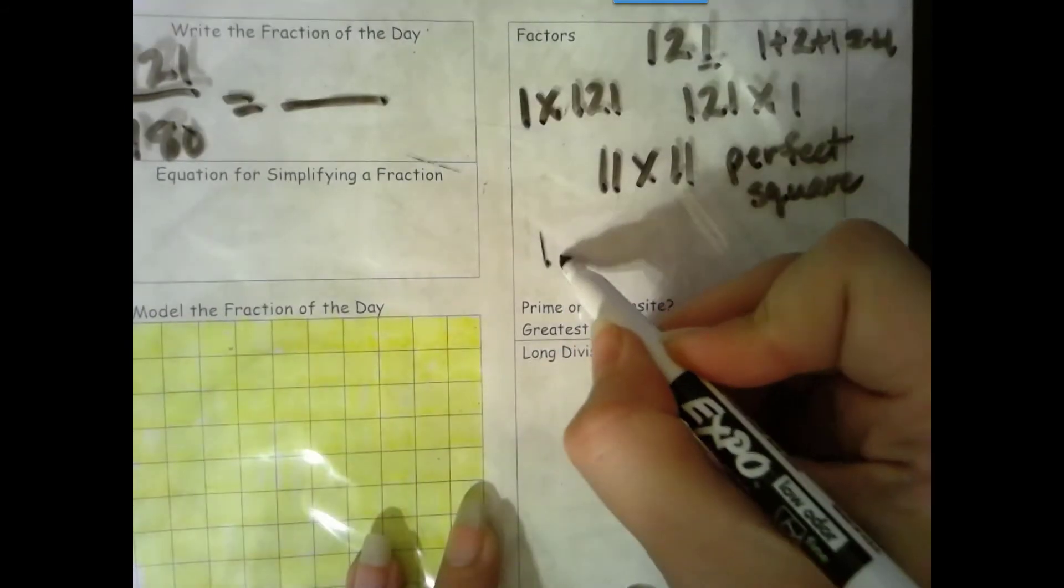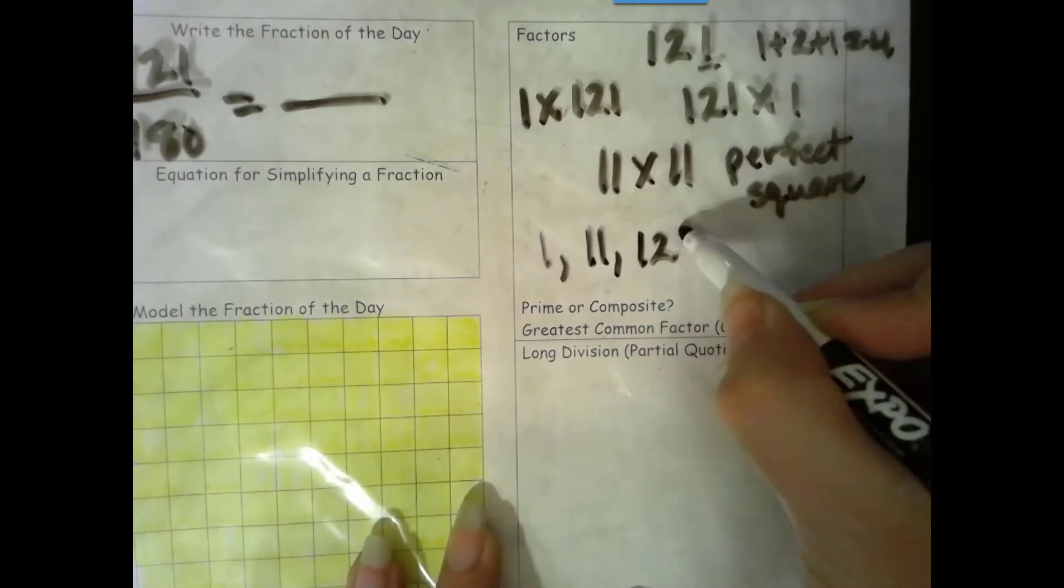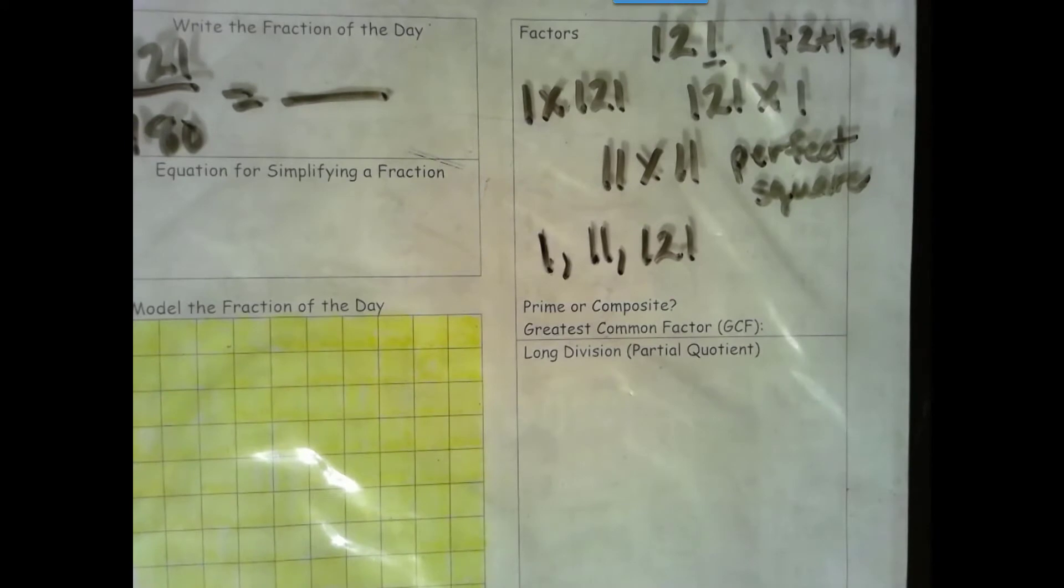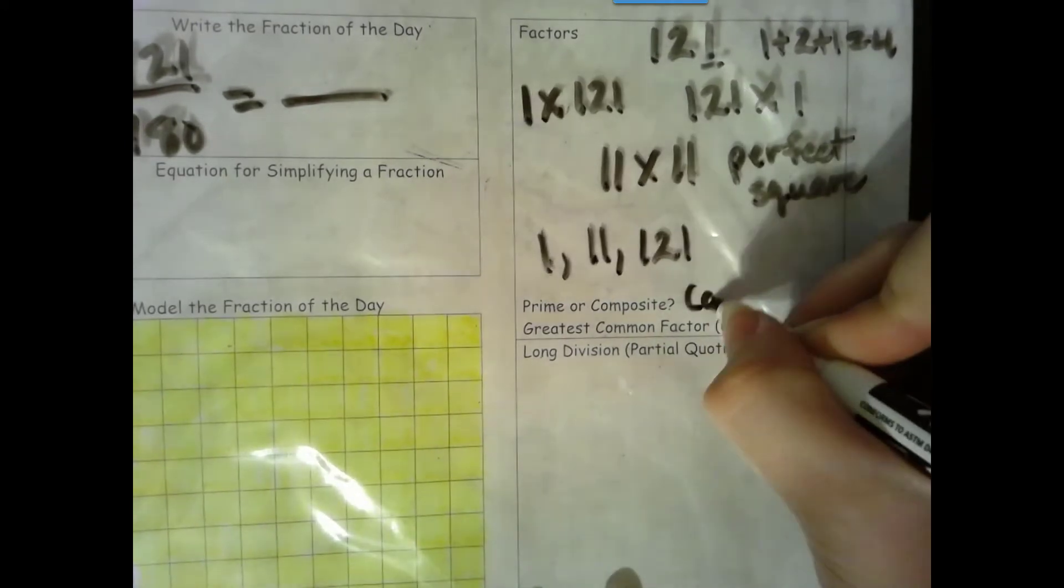Our factors are 1, 11, and 121. Now we only have 3 factors, but that is still more than 2 factors, so it is composite.